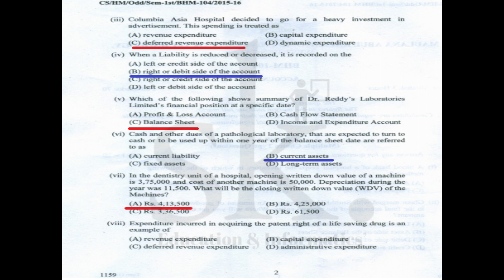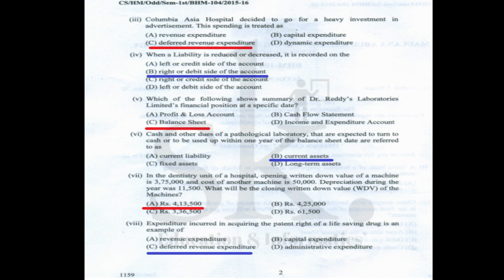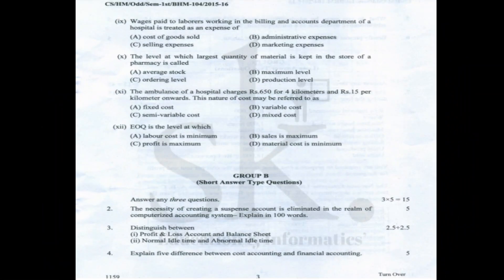Question number eight: expenditure incurred in acquiring a patent right for a life-saving drug is an example of deferred revenue expenditure, because it must be amortized over the number of years within which the life-saving drug will remain in the market.